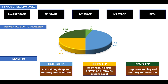The last stage is REM. EEG recordings show it is characterized by beta waves similar to when we are awake. However, during this stage the muscles are actually paralyzed to prevent us from acting out our dreams, with heart rate increased, breathing becoming irregular, and eyes moving rapidly behind closed eyelids — hence the name. REM sleep starts about 90 minutes after we first fall asleep, with the first phase lasting about 10 minutes, getting longer as the night progresses.